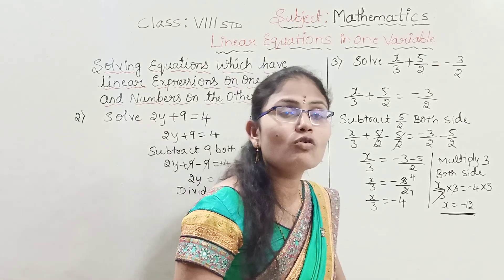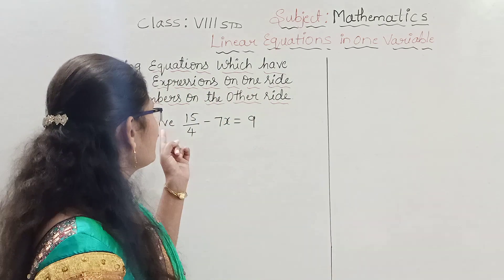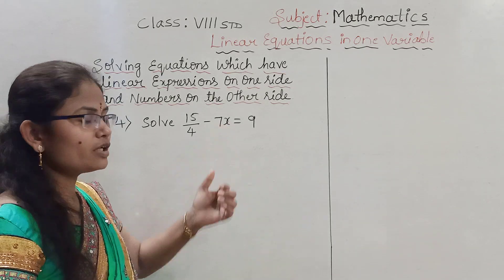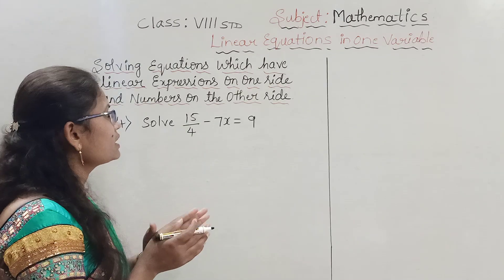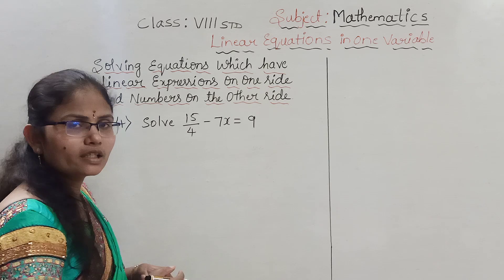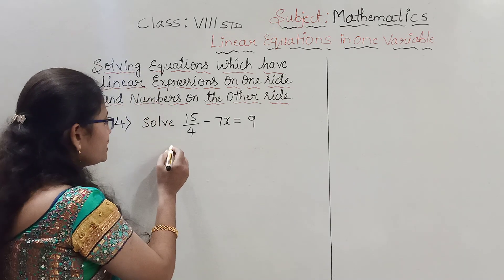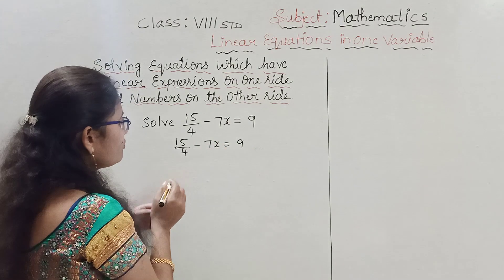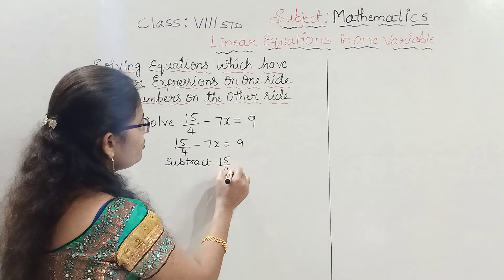In the same way, let us go to the fourth example. They have given: 15 by 4 minus 7x equals 9. We have to find the value of x. With minus 7x there is another term: 15 by 4. We have to eliminate 15 by 4 first. Since 15 by 4 has a positive sign, the opposite operation is subtraction. So we subtract 15 by 4 from both sides.